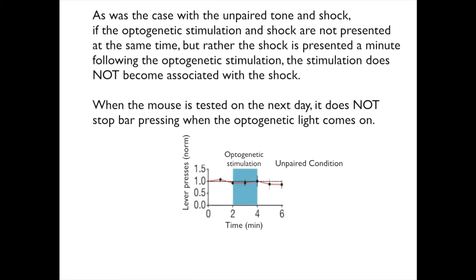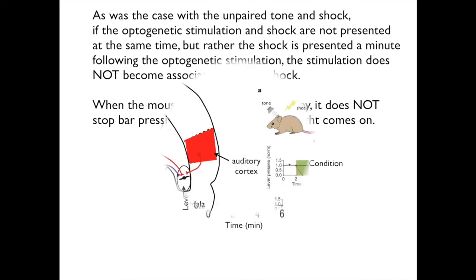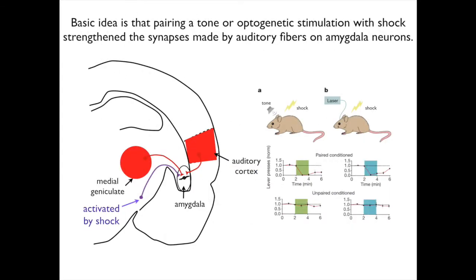As was the case with the unpaired tone and shock, if the optogenetic stimulation and shock are not presented at the same time, but rather the shock is presented a minute following the optogenetic stimulation, the stimulation does not become associated with the shock. When tested the next day, the mouse does not stop bar pressing when the optogenetic light comes on. The basic idea is that pairing a tone or optogenetic stimulation with shock strengthened the synapses made by auditory fibers on amygdala neurons.